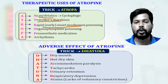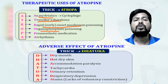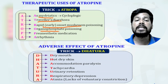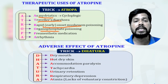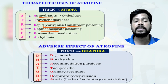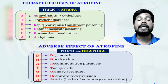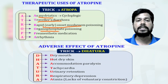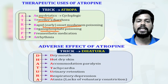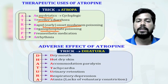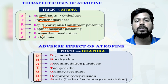Atropine is also used in organophosphorus poisoning. Organophosphorus compounds act as irreversible acetylcholinesterase inhibitors — they inhibit acetylcholinesterase and increase acetylcholine, leading to a cholinergic crisis. In that condition, atropine is useful to block the excess acetylcholine effects.